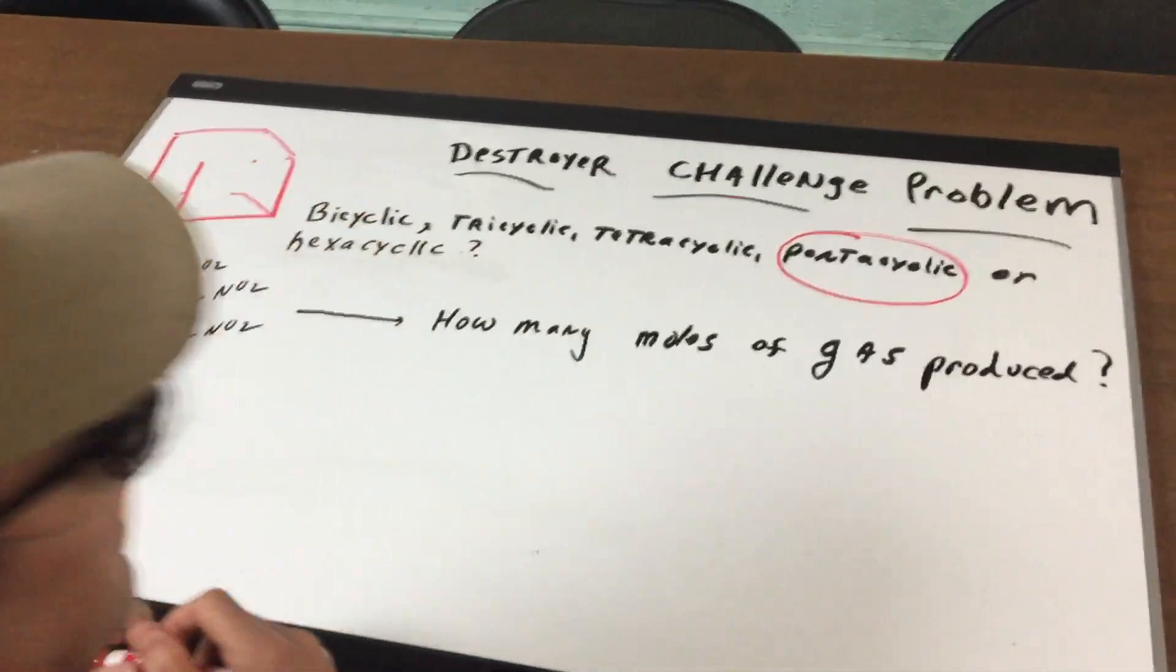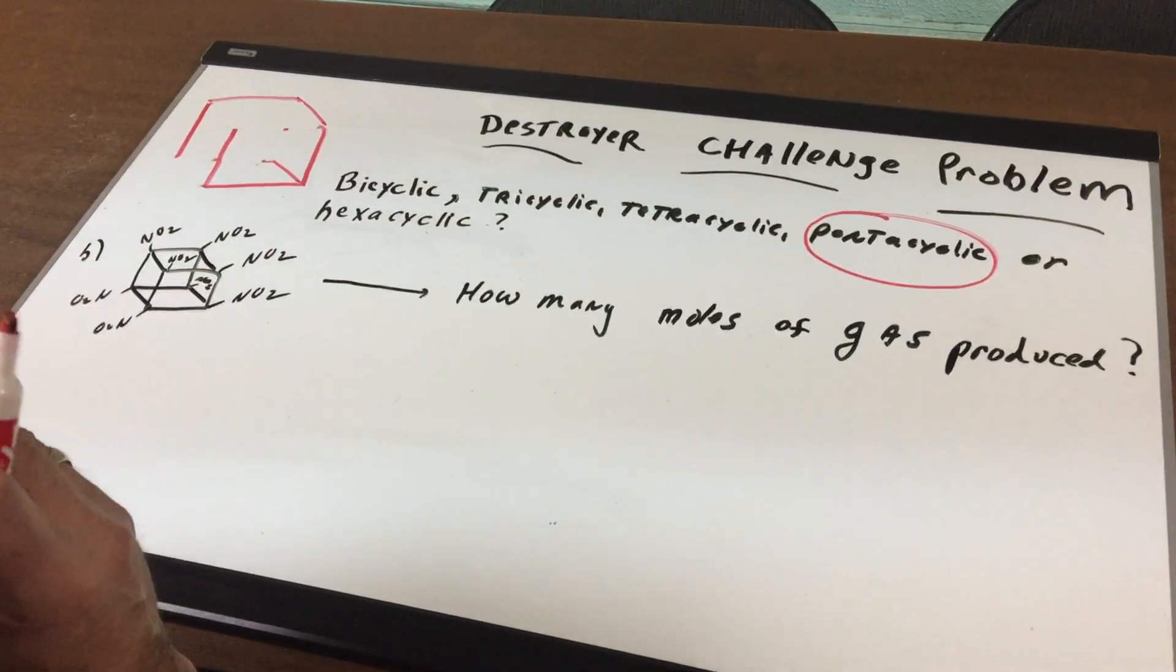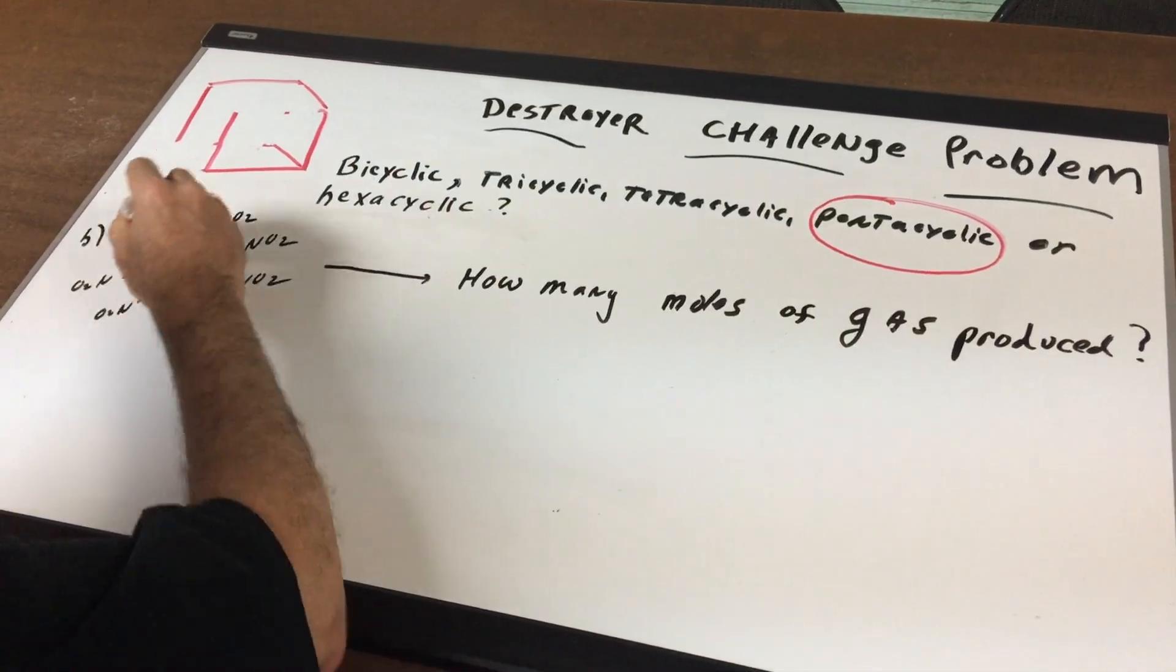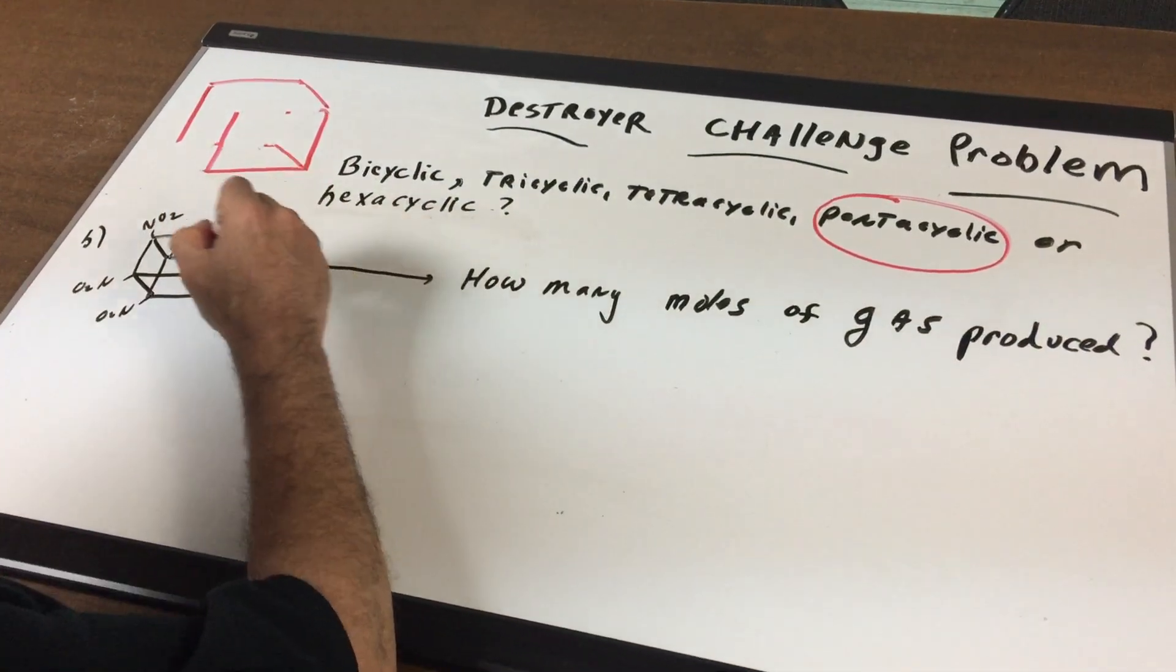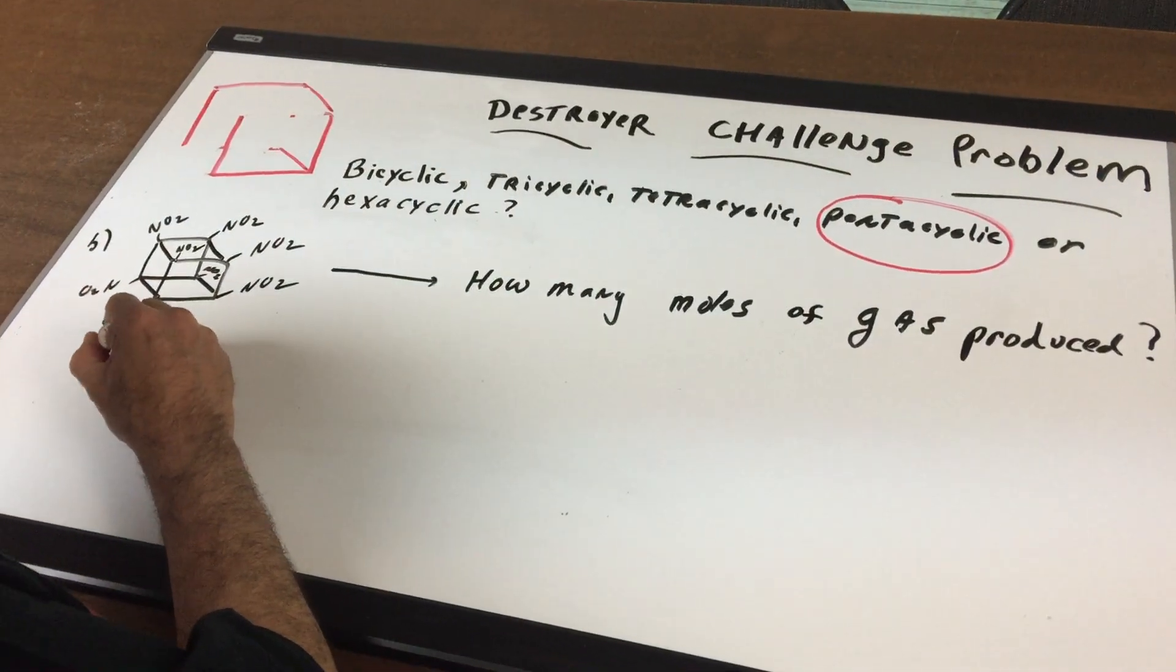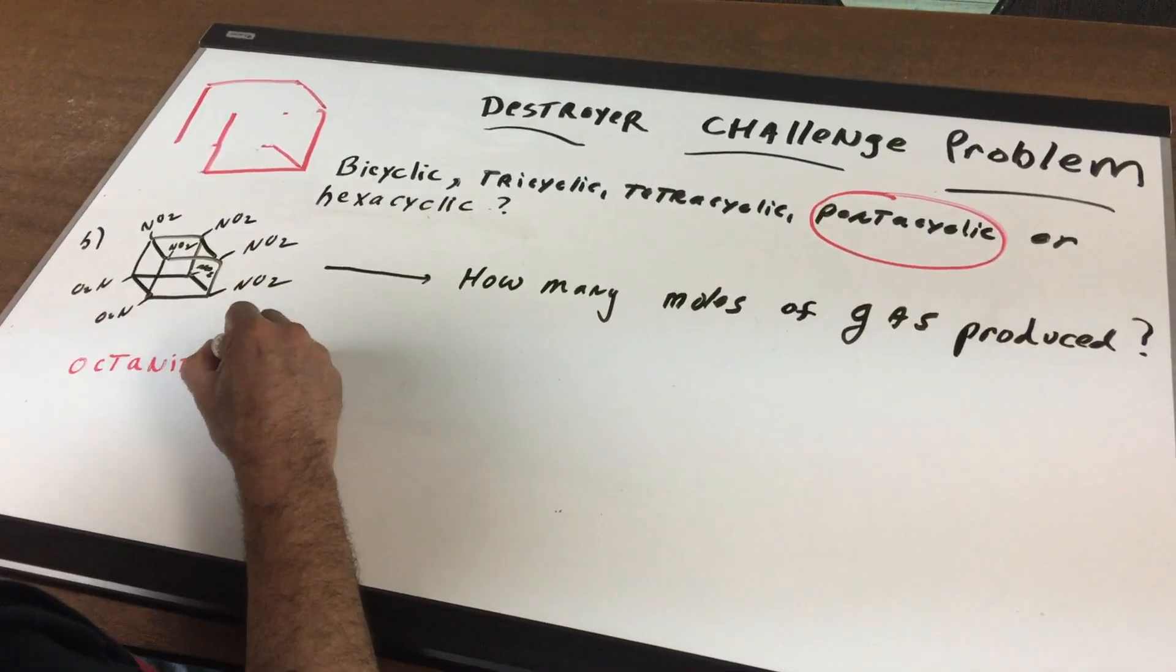Let's go for our next question. I ask you, how many moles of gas do you think would be produced? Now the question is, what the hell is this? Well, as you can see, we have one, two, three, four, five, six, seven, eight. There's eight nitro groups. So this is octanitrocubane.